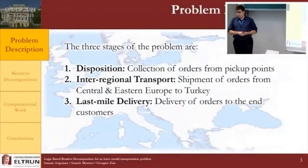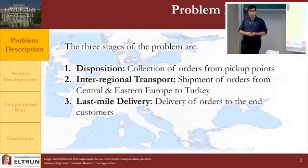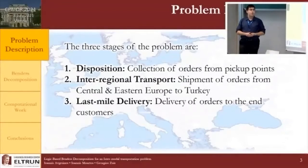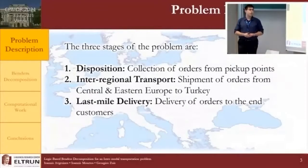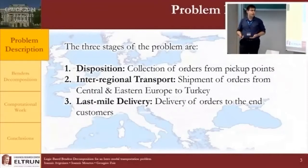The problem has three stages. The disposition stage includes collection of orders from pickup points. The international transport stage includes shipment of these orders from depots located in central and eastern Europe to warehouses in Turkey. The last-mile delivery stage includes delivery of these orders from these warehouses to the final destination.